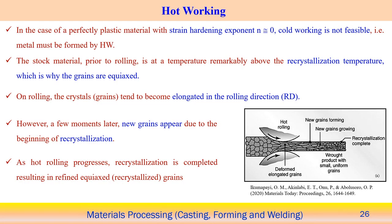Increasing annealing time over a long period also reduces the recrystallization temperature. Looking at the hot working process: for a perfectly plastic material with strain hardening exponent n = 0, cold working is not feasible and the material must be formed through the hot working process.